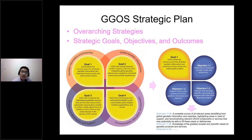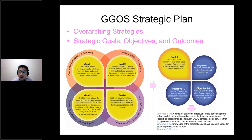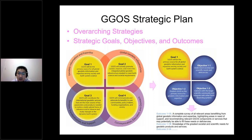The GIGOS strategy plan is an overarching strategy of GIGOS and describes strategic goals, objectives, and outcomes. You can see the whole strategies, strategic goals, objectives of strategic goal one, and also outcomes of objectives one and two and so on.